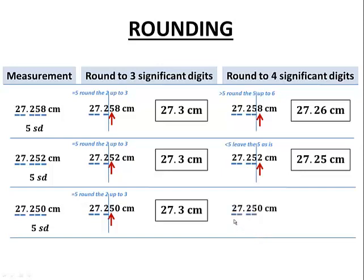To four significant digits, we want to keep these four numbers, so we'll put our barrier. We'll focus on the zero. Zero is clearly less than five, so we're going to leave this five as it is. So we'll just leave it as 27.25 centimeters.